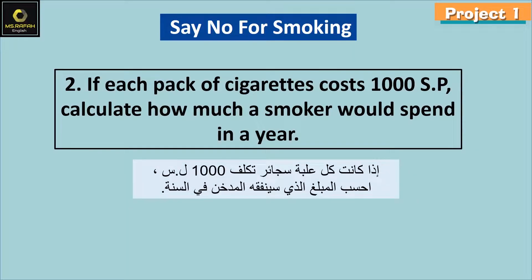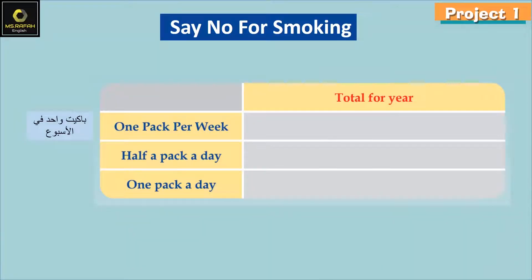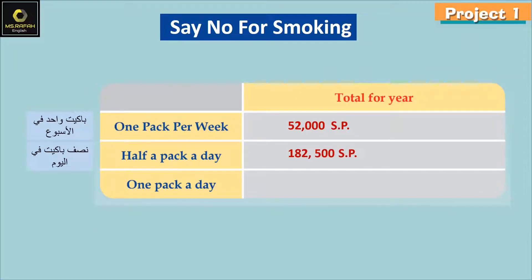Question 2: if each pack of cigarettes costs 1,000 Syrian Pounds, calculate how much a smoker would spend in a year. One pack per week: 52,000 Syrian Pounds. Half a pack a day: 128,500 Syrian Pounds. One pack a day: 365,000 Syrian Pounds.